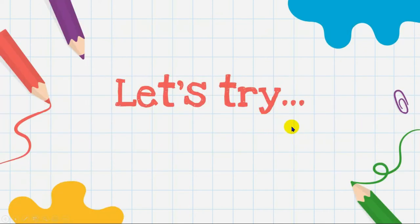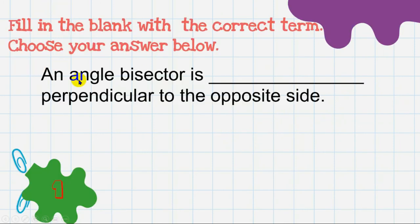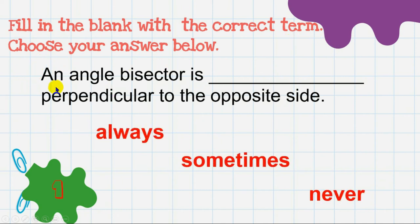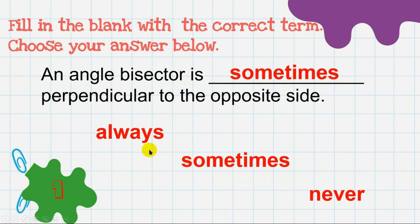Let's have different questions regarding this topic. For the first question — fill in the blank: an angle bisector is blank perpendicular to the opposite side. Is it always, sometimes, or never perpendicular? The answer is 'sometimes' — for a right triangle, the angle bisector can be perpendicular to the hypotenuse.